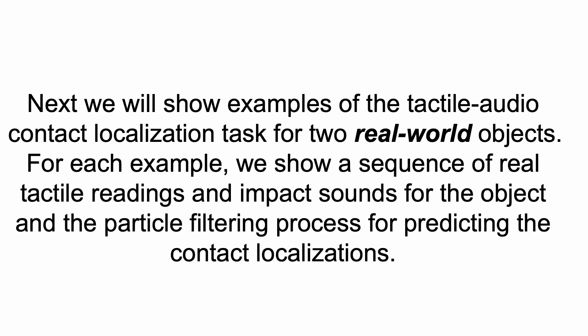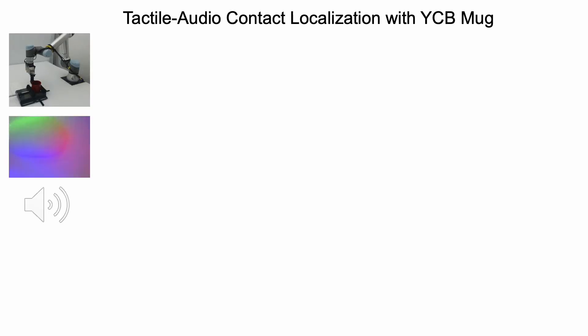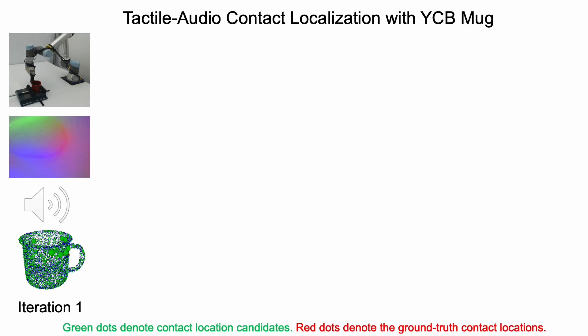Next, we show examples of the tactile-audio contact localization task for two real-world objects. For each example, we show a sequence of real tactile readings and impact sounds, and the particle filtering process for predicting contact localizations. For initialization, we randomly sample 2,500 particles from the signed distance function representing the object. At each iteration, we extract features from the tactile readings and impact sounds, use cosine similarities to compare these features with particles sampled from the object's surface as candidate contact locations, and resample particles based on their similarity scores, assigning larger weights to particles with larger similarity scores.